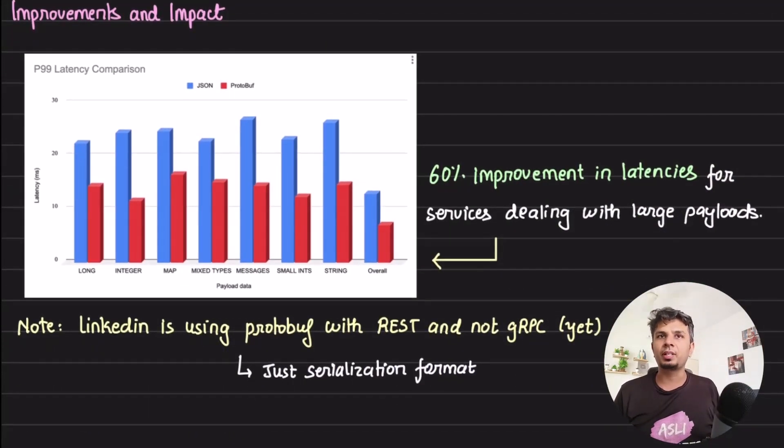Okay, so this is how they did rollout. Now what was the improvement and impact of it? The improvement of this was 60 percent improvement in latency, which is humongous at the scale at which LinkedIn operates.